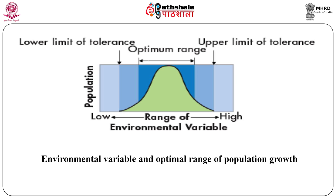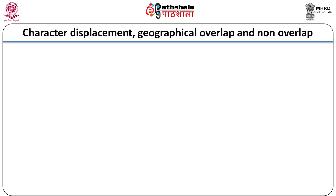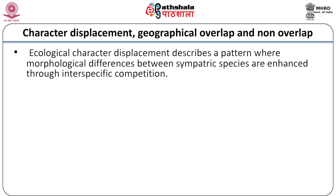Later, Hutchinson introduced the idea of a realized niche, in which the effects of competition — the biotic variable — reduce the fundamental niche, offering species only the area they practically could occupy. Ecological character displacement describes a pattern where morphological variations between sympatric species are enriched through interspecific competition. The theory was first developed by W.L. Brown and E.O. Wilson in 1956.